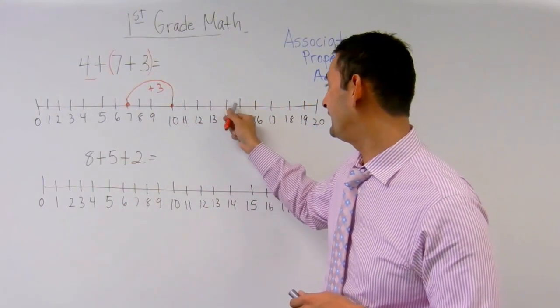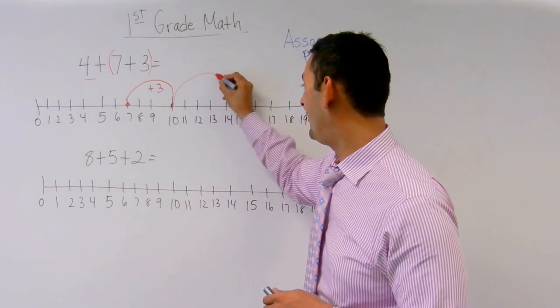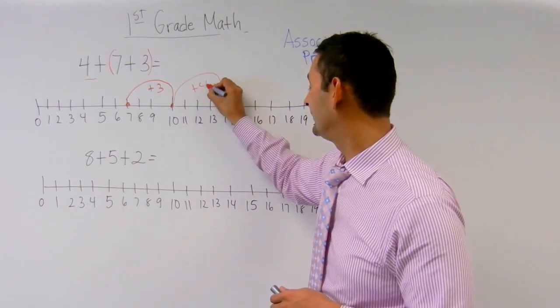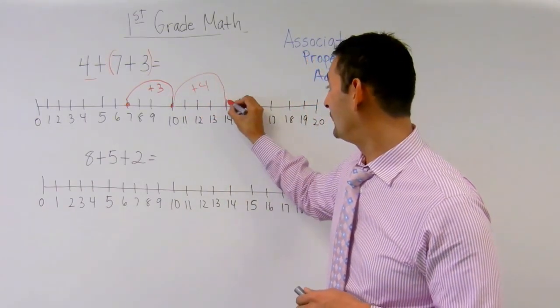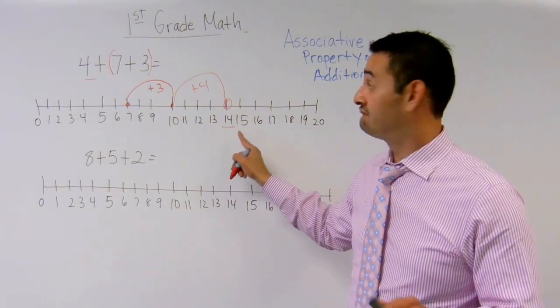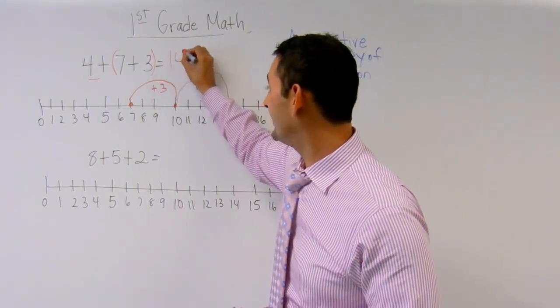And now all I have to do is I've got this 4 right here and I'm just going to add 4 more. 1, 2, 3, 4. I just jump all the way here, plus 4. And what do we have? 14. And that's it. So we have 14 right there.